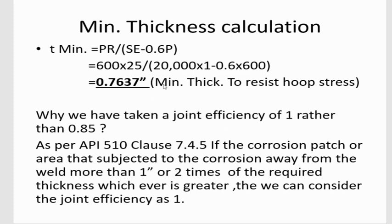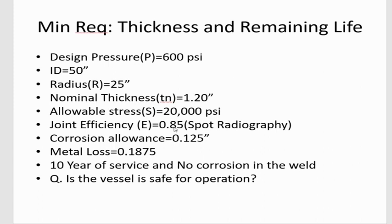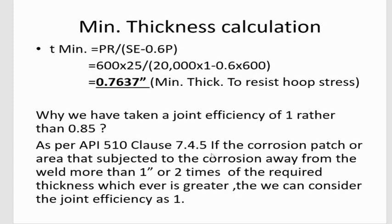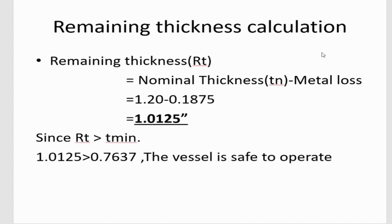We used a joint efficiency of 1 rather than the given 0.85. As per API 510 clause 7.4.5, if the corroded area is located away from the weld by more than one inch or two times the required thickness — whichever is greater — then joint efficiency can be taken as 1. In our case, the corrosion is away from the weld by four inches, so we use E = 1. Therefore, the minimum thickness to resist hoop stress is 0.7637 inches.